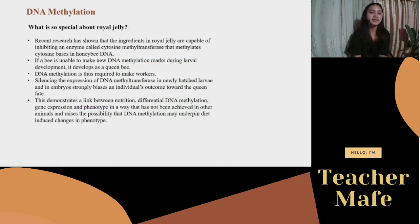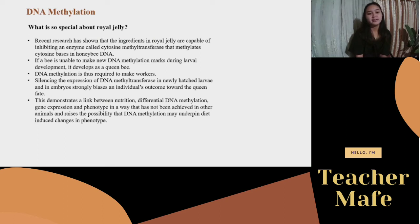What is the importance of DNA methylation to royal jelly and the development of female queen bees? Recent research has shown that the ingredients in royal jelly are capable of inhibiting the enzyme cytosine methyltransferase. Royal jelly therefore inhibits the methyltransferase that methylates cytosine bases in honeybee DNA. If there is no DNA methylation — because methyltransferase is inhibited by royal jelly during larval development — then the larva will develop into a queen bee. DNA methylation is thus required to make workers; silencing DNA methylation in newly hatched larvae and embryos strongly biases the individual's outcome toward the queen phenotype.